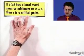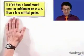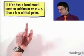First of all, let's just remember that if we have a maximum or minimum somewhere, let's say at x equals c, then in fact c is a critical point. Now, what's a critical point again?